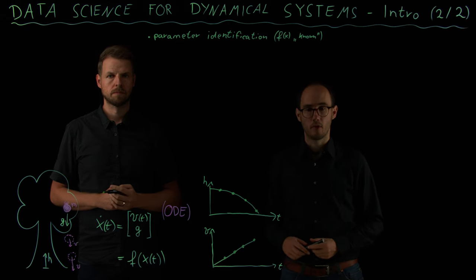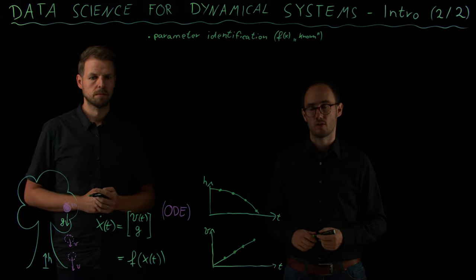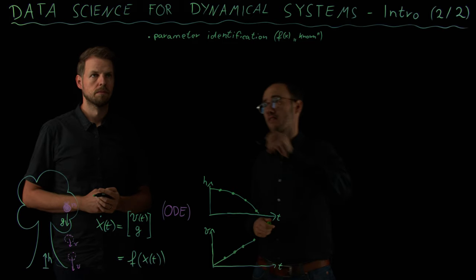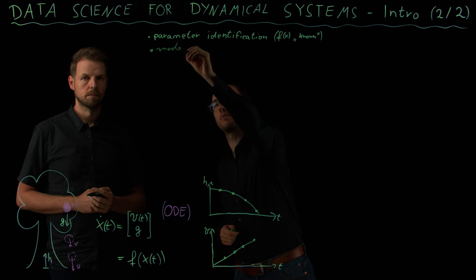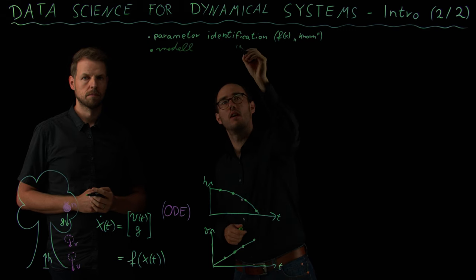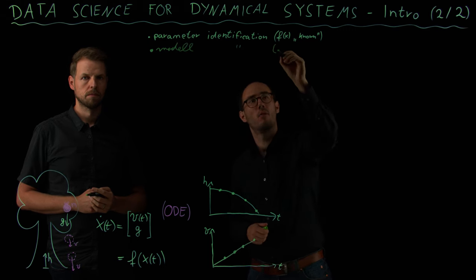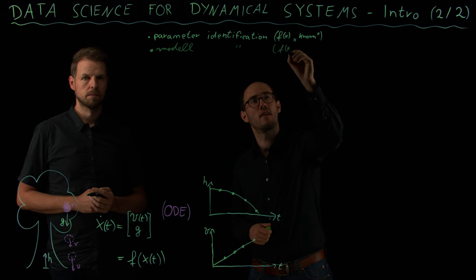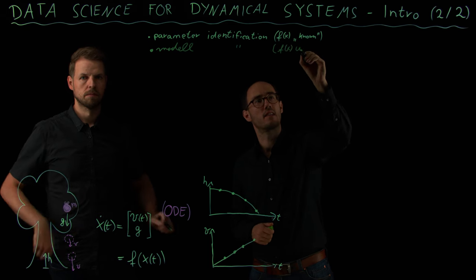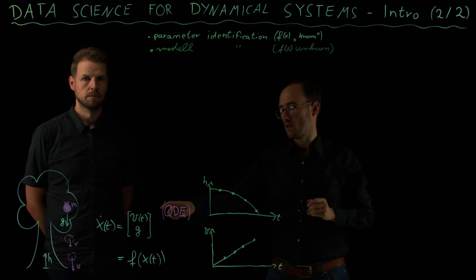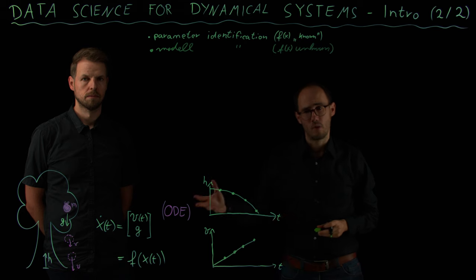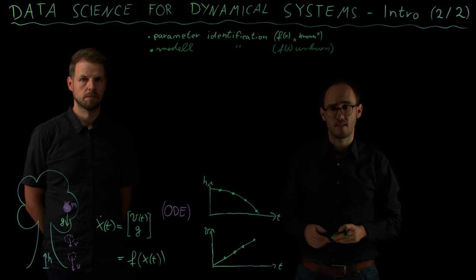There might be also additional situations where the right hand side of our model might be even unknown structurally. In this case, we have another opportunity which is what we call model identification, where our f of x or right hand side is completely unknown.